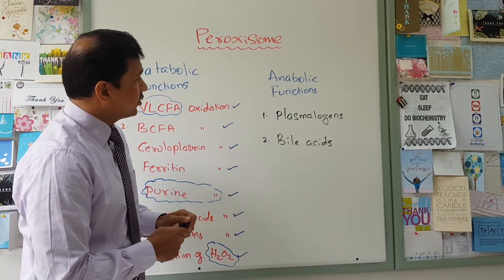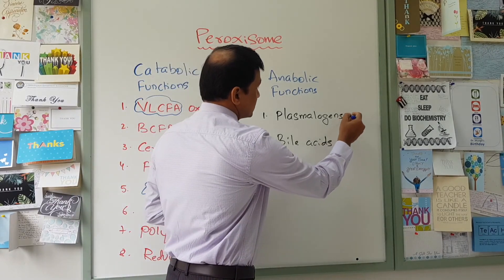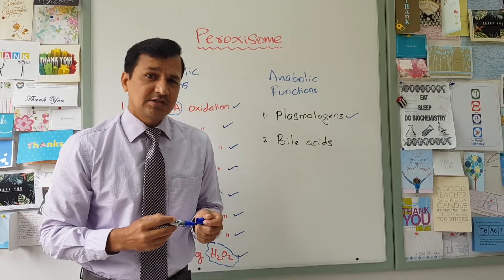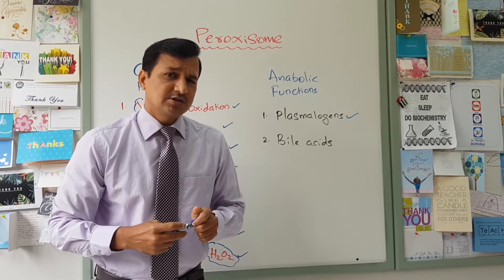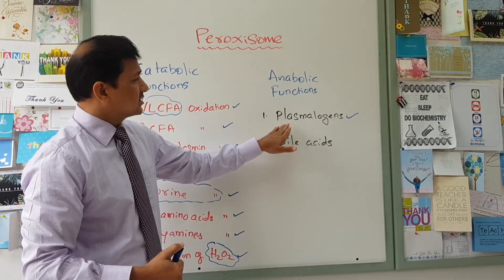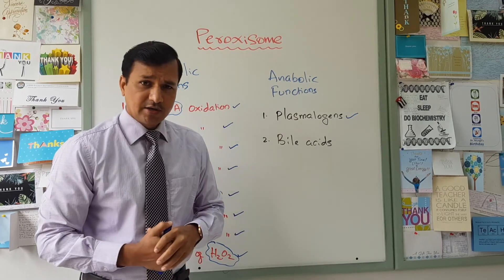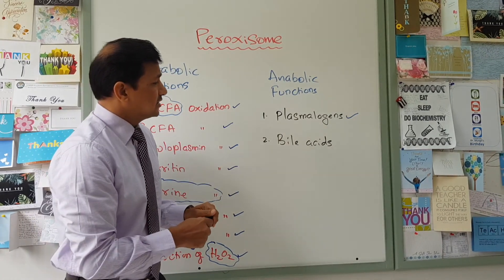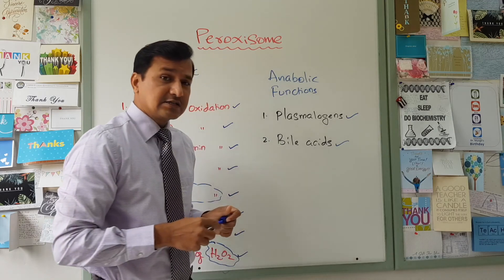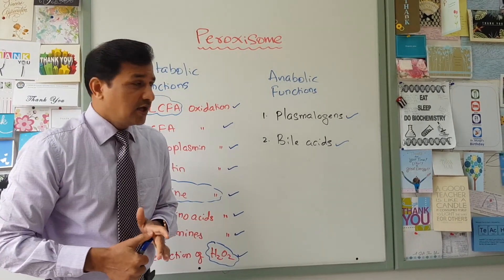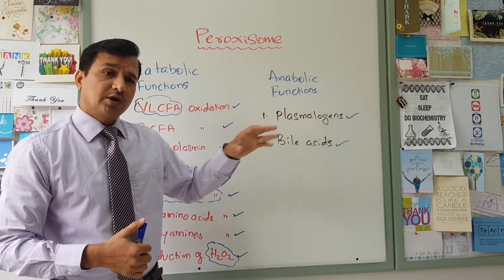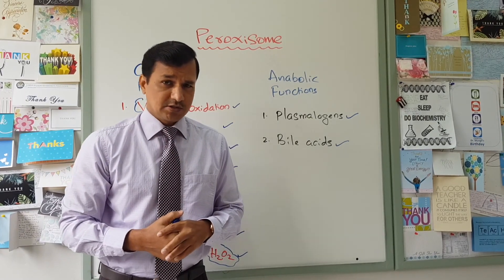Now the anabolic functions of peroxisomes: peroxisomes are involved in plasmalogen synthesis — plasmalogens are complex membrane lipids, and their synthesis occurs in the peroxisome. Peroxisomes are also involved in the synthesis of bile acids from cholesterol. These are the two anabolic functions of peroxisomes.